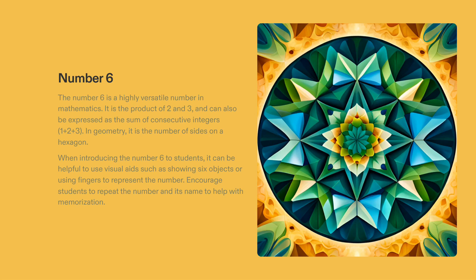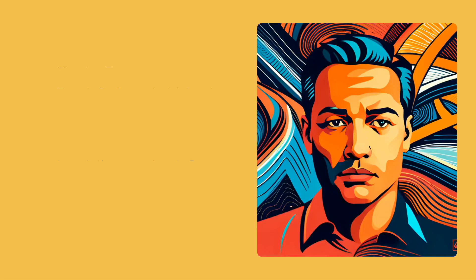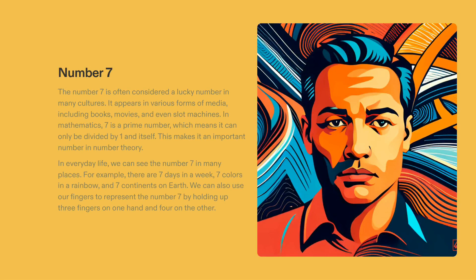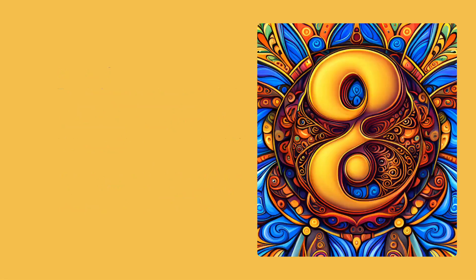The number seven is an important number in many cultures, mathematics, and everyday life. It's considered a lucky number and appears in books, movies, and even slot machines. There are seven days in a week, seven colors in a rainbow, and seven continents on Earth. It's easy to remember too, because we can use our fingers to represent the number seven by holding up three fingers on one hand and four on the other.